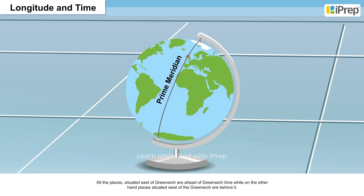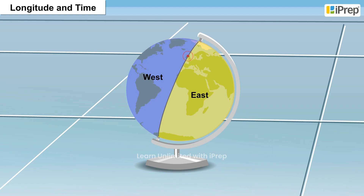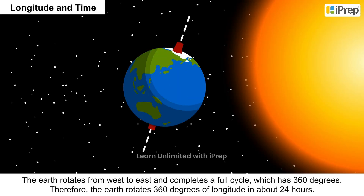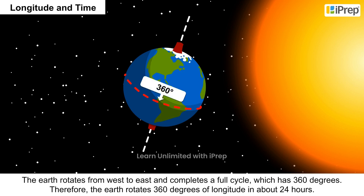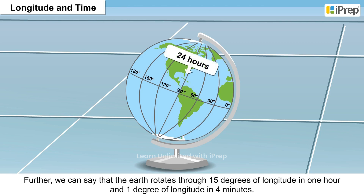Longitude and Time: All places situated east of Greenwich are ahead of Greenwich time, while places situated west of Greenwich are behind it. The Earth rotates from west to east and completes a full cycle of 360 degrees. Therefore, the Earth rotates 360 degrees of longitude in about 24 hours. Further, we can say that the Earth rotates through 15 degrees of longitude in 1 hour and 1 degree of longitude in 4 minutes.